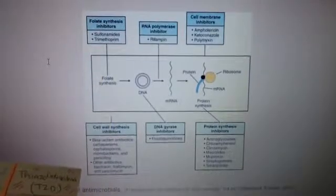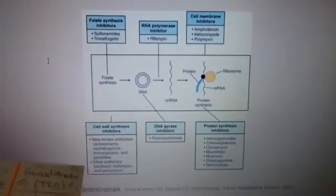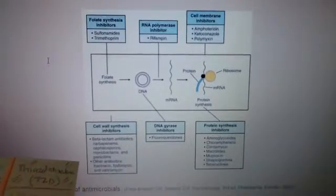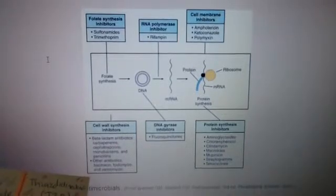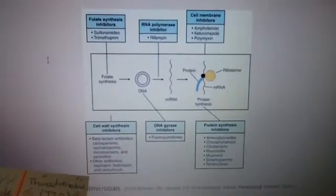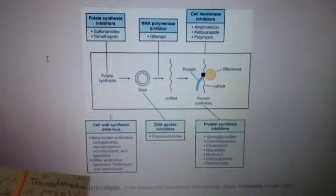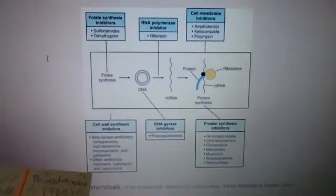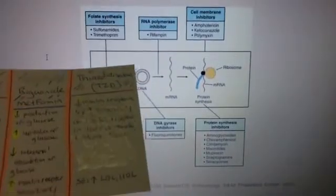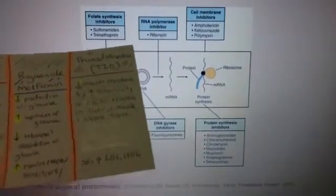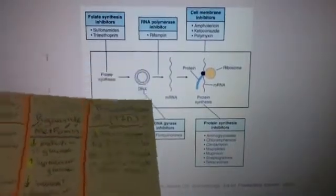Cell wall synthesis inhibitors — remember the beta-lactam antibiotics: carbapenem, cephalosporins, monobactams, and penicillins; and other antibiotics such as bacitracin, phosphomycin, and vancomycin. Then the RNA polymerase inhibitors — rifampin.